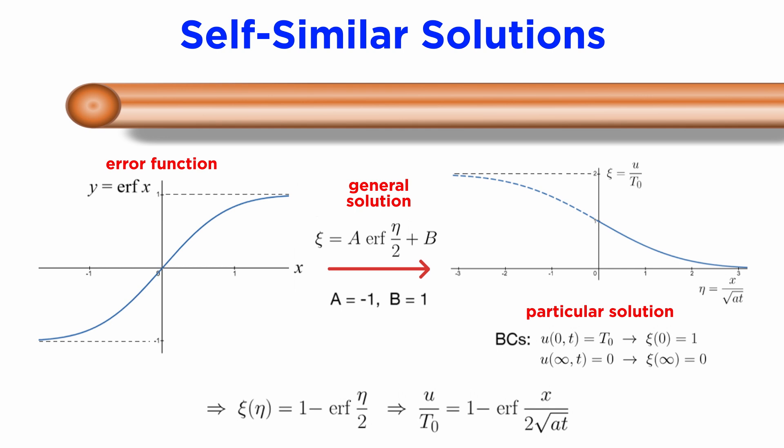Note that this graph does not contain time as an independent variable. The dimensionless solution looks the same for all times t, and that is where the name self-similar solution comes from, as no matter when you look at the normalized solution, it always looks the same.